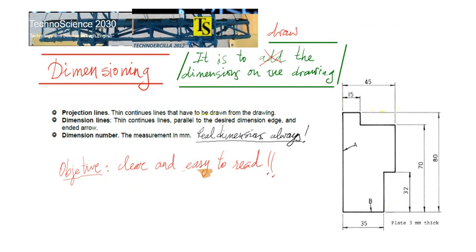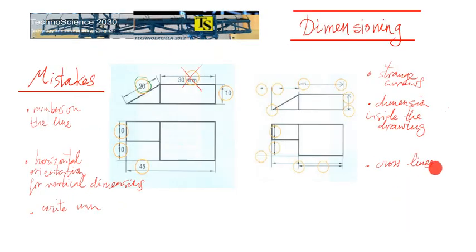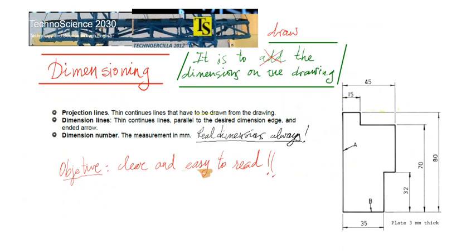Another common mistake is to cross lines. That happens here. You are crossing lines. This is because you want to dimension this and that. Better if you put the longest outside. So this is a good example. You want to dimension 32, 70, and 80. The 80 is farther from the drawing than the 70 and the 32.